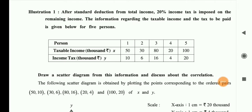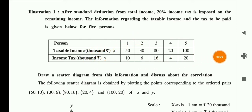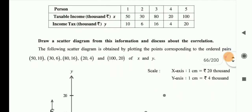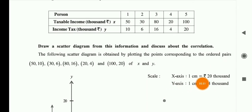Illustration 1: After standard deduction from the total income, 20% income tax is imposed on the remaining income. The information regarding taxable income and tax to be paid is given for five persons. We have to draw a Scatter Diagram using this information and discuss the correlation. On the x-axis, one centimeter equals 20,000, going up to 100,000. On the y-axis, one centimeter equals 4,000.